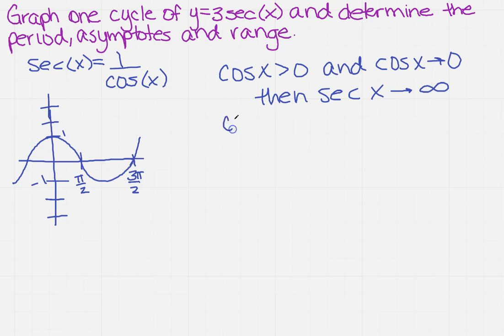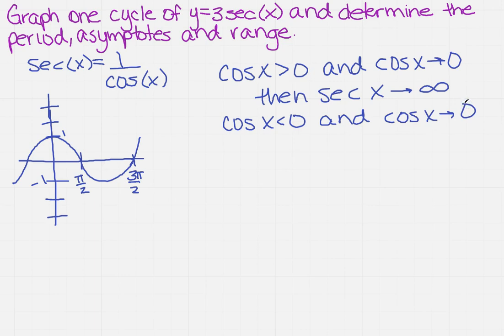If we look at the opposite — the cosine of x is less than 0 and the cosine of x is still going towards 0 — then the secant of x is going to be going towards negative infinity. You may not understand why that's helping you yet, but that's going to help us find our range.